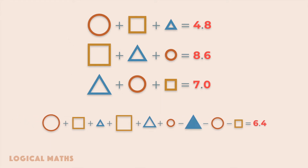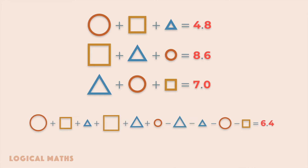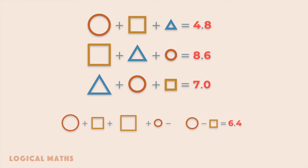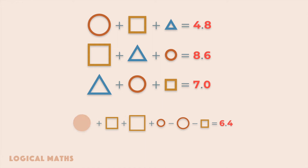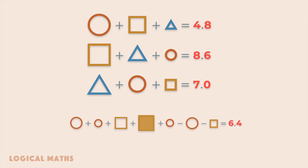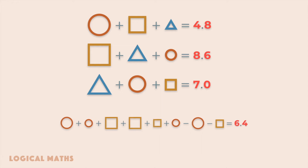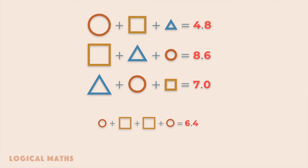We can replace the large triangle with the sum of medium and small triangles. After that, we can cancel out all triangles from the equation. In the same way, we can replace the large circle and the large square, so we can cancel out medium circles and small squares. On the left side we have two small circles and two medium squares.